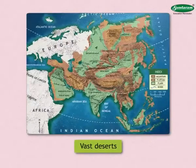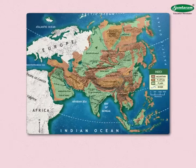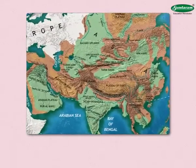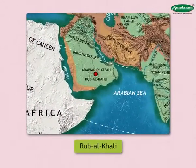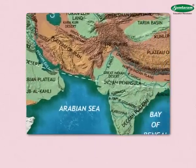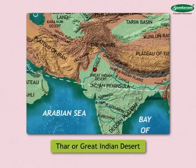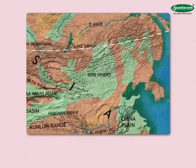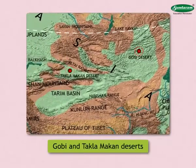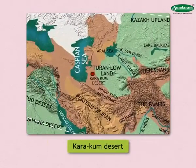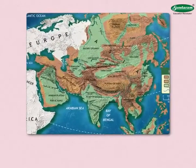Deserts: A vast desert formed in different parts of the continent is also a special feature of Asia. Rub' al Khali in the Arabian Plateau, the Thar or Great Indian Desert in the Indian subcontinent, the Gobi and Taklamakan Deserts in China, and the Karakum Desert in Turkmenistan occupy a large part of the continent.